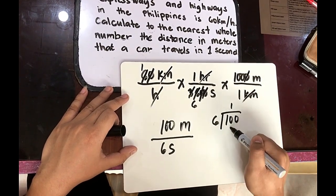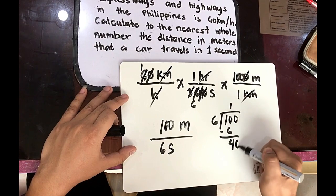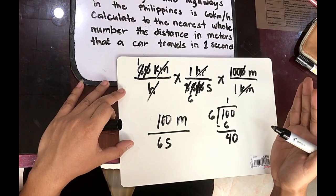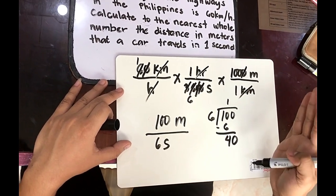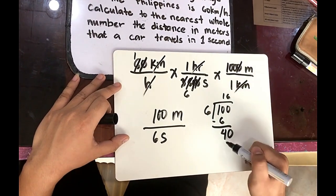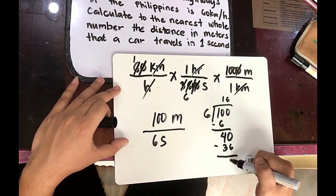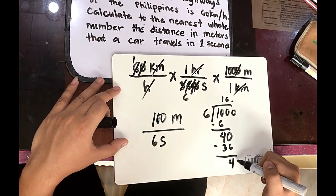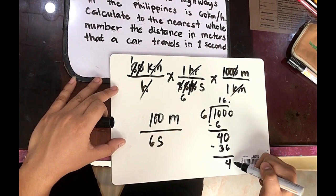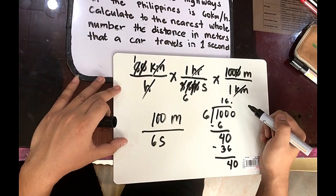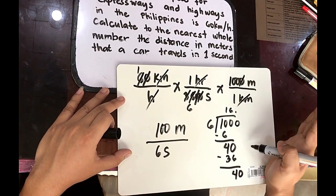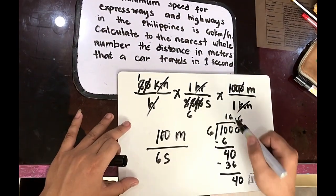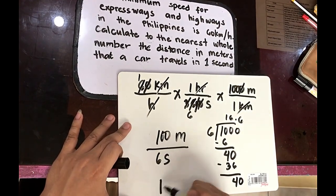16.6. Or in whole number, that is rounding up. So it will become 17 meters.